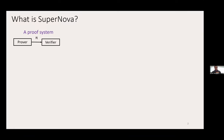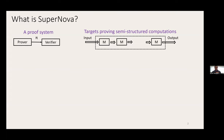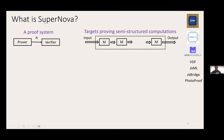So let me start with a simple question: what is SuperNOVA? SuperNOVA is a proof system with a prover and verifier. What's different is it targets what we call semi-structured computations — computations where the circuit can be decomposed into multiple pieces. This pattern applies to many applications people care about, like proving EVM executions, CPU executions like RISC-V, WebAssembly, ZKML, ZKBridge, Photoproof, or even VDFs.